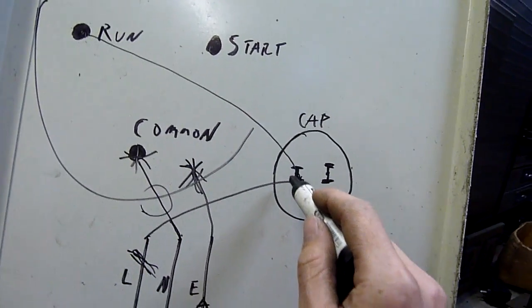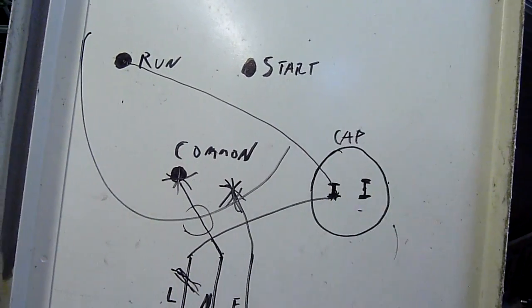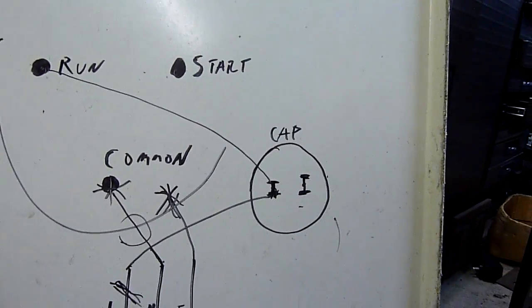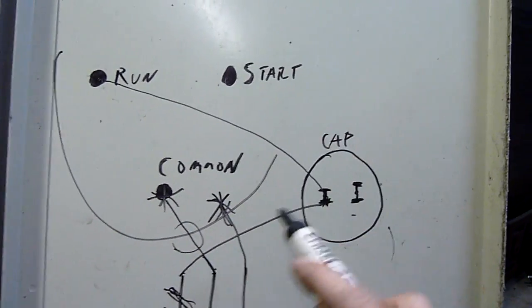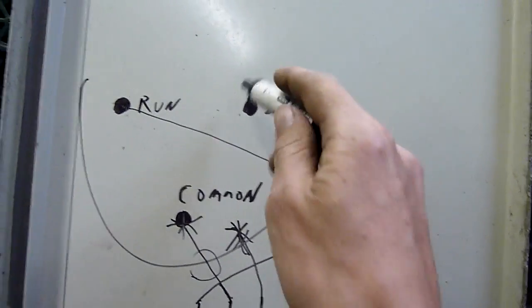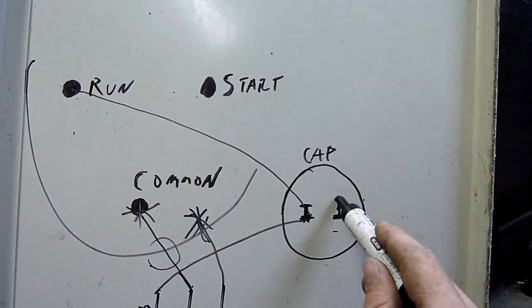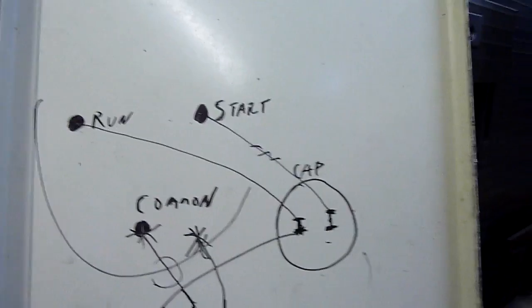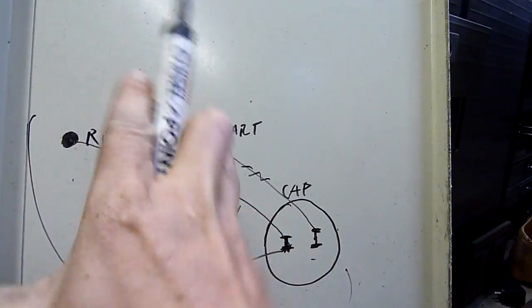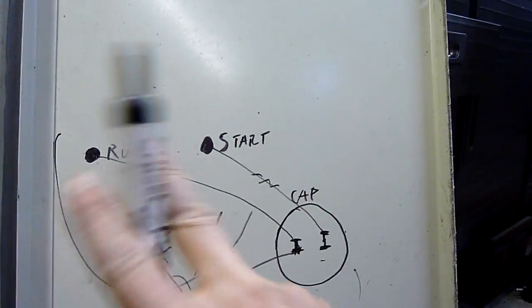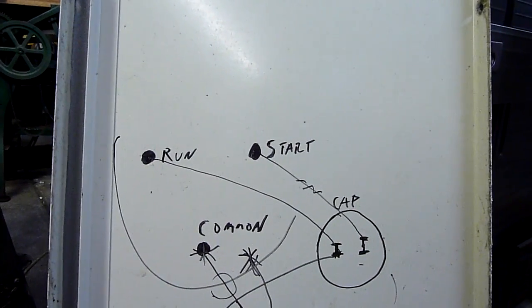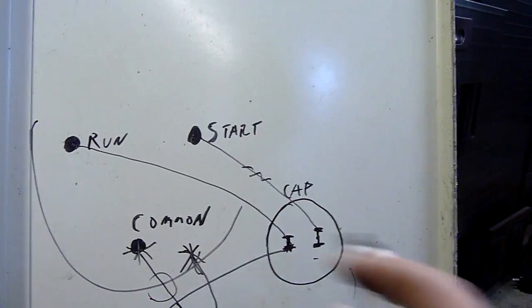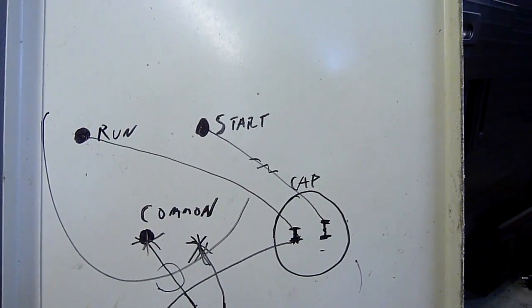But you do not want to have that going to start because the start winding only wants enough charge to get the motor running and then just keep running. If you supply it with constant amps and voltage, you'll burn the start winding out. That's why the cap's there - it'll send an emulated phase to the start to get the motor running. It's like three legs trying to run - the three legs just stall or get stuck if it doesn't have a break in the phasing.